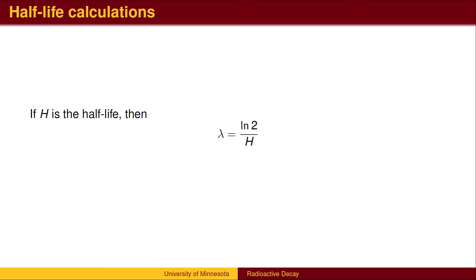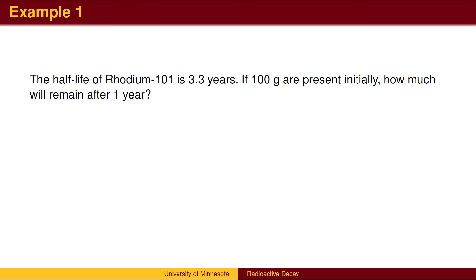This process generalizes. To find lambda, divide the log of 2 by the half-life. Returning to the example, we wish to find the amount that remains after one year, if we know the half-life. We begin by finding the decay rate, lambda.